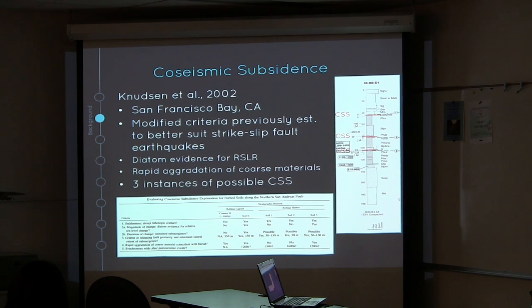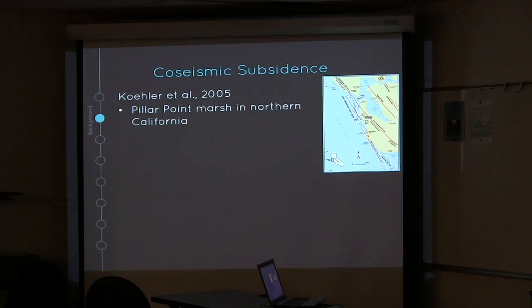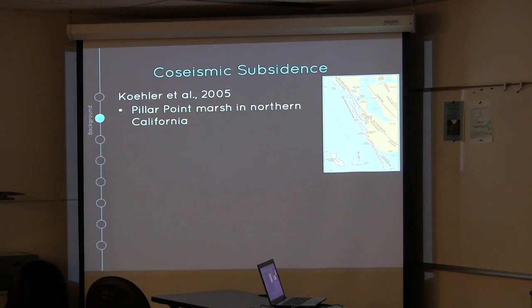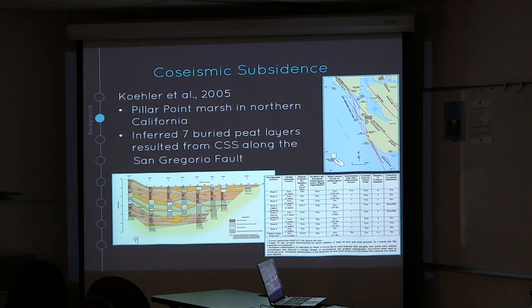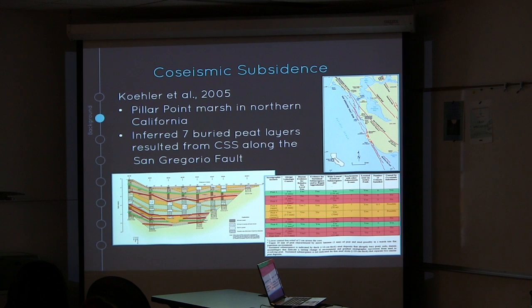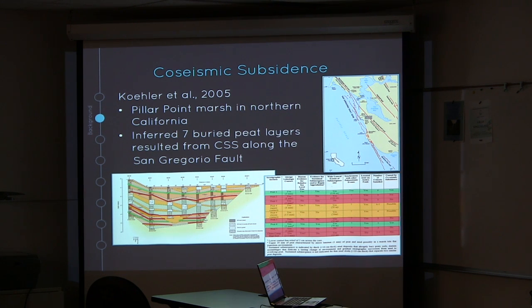From their study, they found three instances of possible co-seismic subsidence. Kohler et al. 2005 also looked at co-seismic subsidence in a strike-slip setting. They inferred that seven buried peat layers resulted from co-seismic subsidence along the San Gregorio fault. Using the criteria set up by Knudsen and Nelson, two of their contacts were caused by co-seismic subsidence, two were possibly caused by co-seismic subsidence, and five were not.